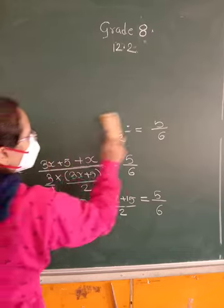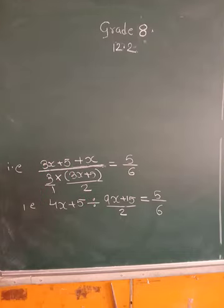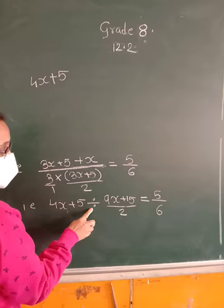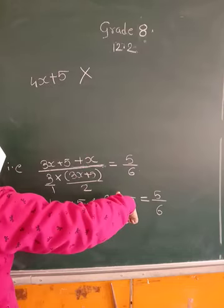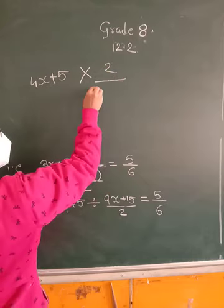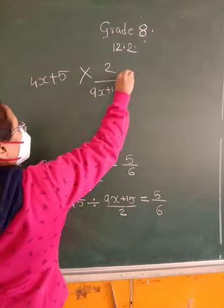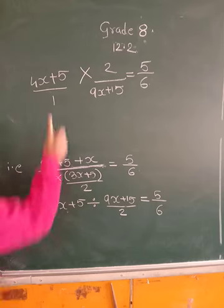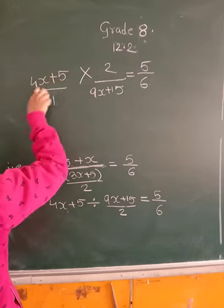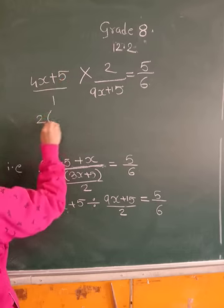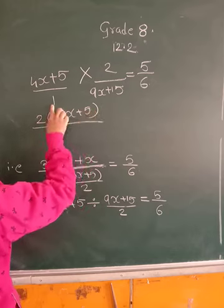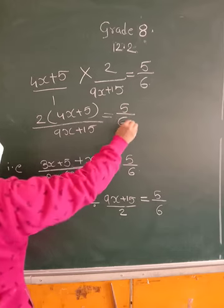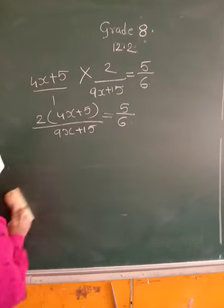4X plus 5, if I convert division into multiplication, then this becomes reciprocal. Into 2 upon 9X plus 15, this equals 5 upon 6. Again numerator into numerator. 2 you are multiplying with these two terms. So 2 into 4X plus 5 upon 9X plus 15 equals 5 upon 6.